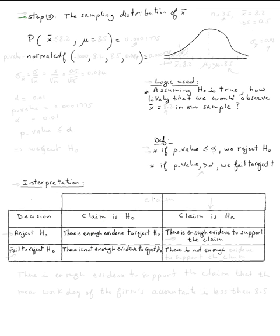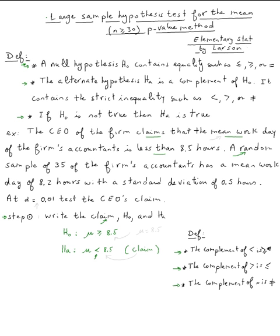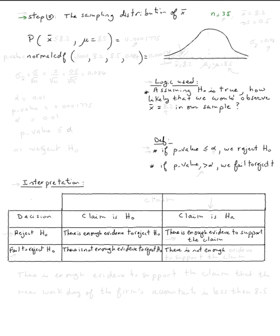Step two: we look at the sampling distribution of x bar. From the problem, n is 35, x bar equals 8.2, and s equals 0.5. We always look at mu equal 8.5, and think of the sampling distribution of x bar given that mu equals 8.5.